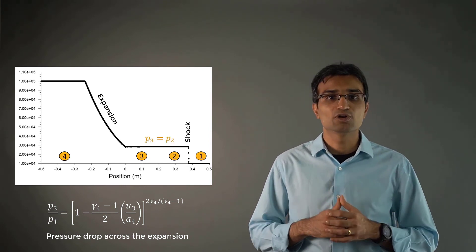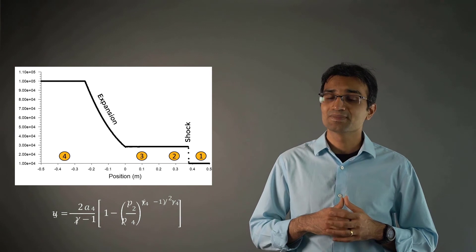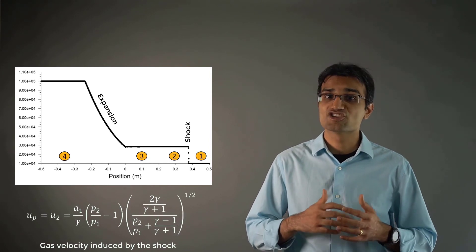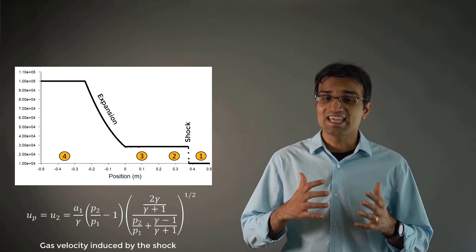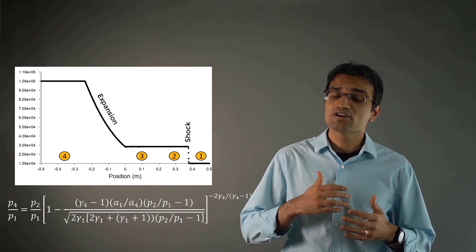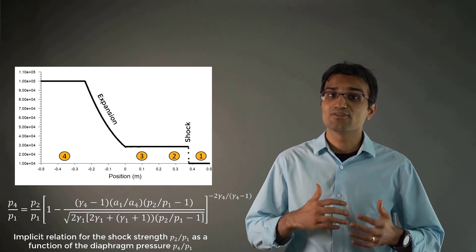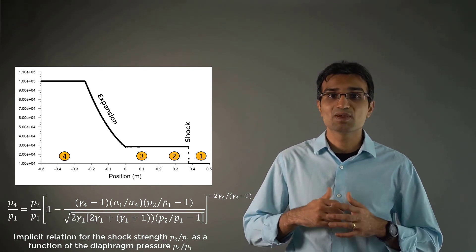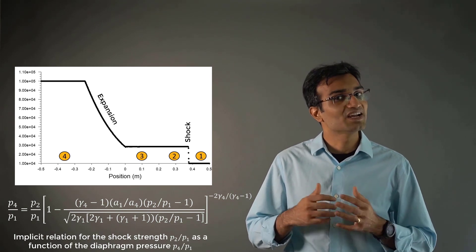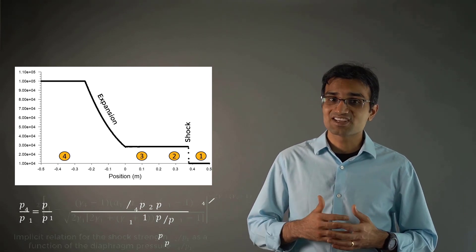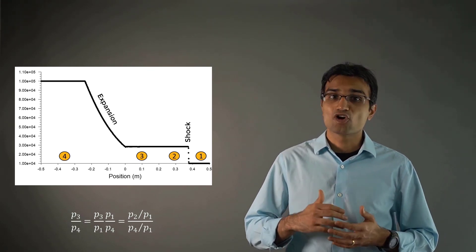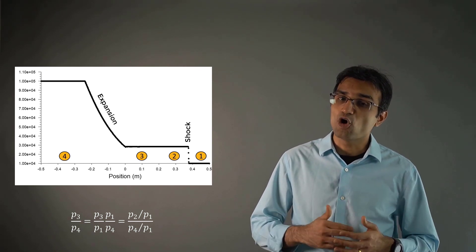All the relations follow from our analysis of moving shocks and expansions. The pressure drop across the expansion can be computed using this equation. Since P3 is equal to P2, we get an expression for U3 as shown here. We can compute the gas velocity induced by the shock as shown here. Using the equality between U3 and U2, we can derive an implicit relation for shock strength P2 by P1 as a function of diaphragm pressure P4 by P1. Keep in mind that this is an implicit relation and therefore it is solved using numerical techniques. The expansion strength can be obtained, and subsequently all the other flow quantities can be found from shock and expansion relations that we've already discussed.